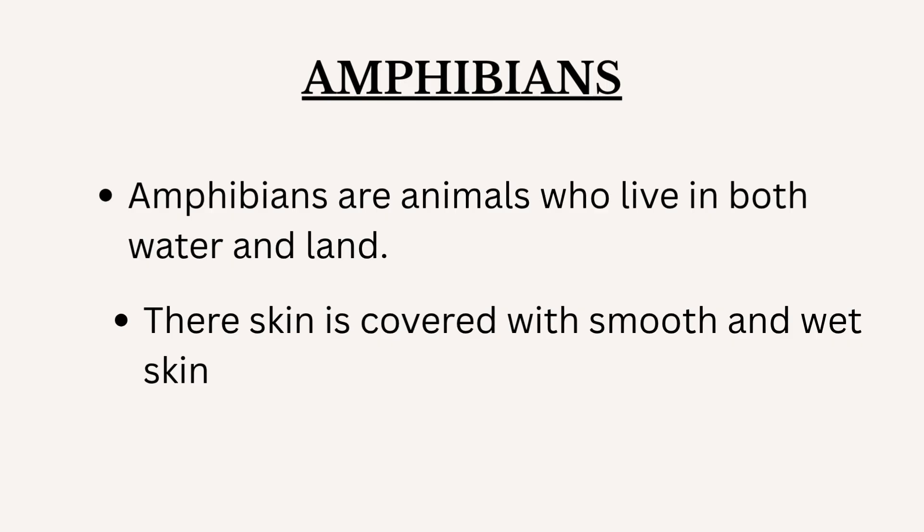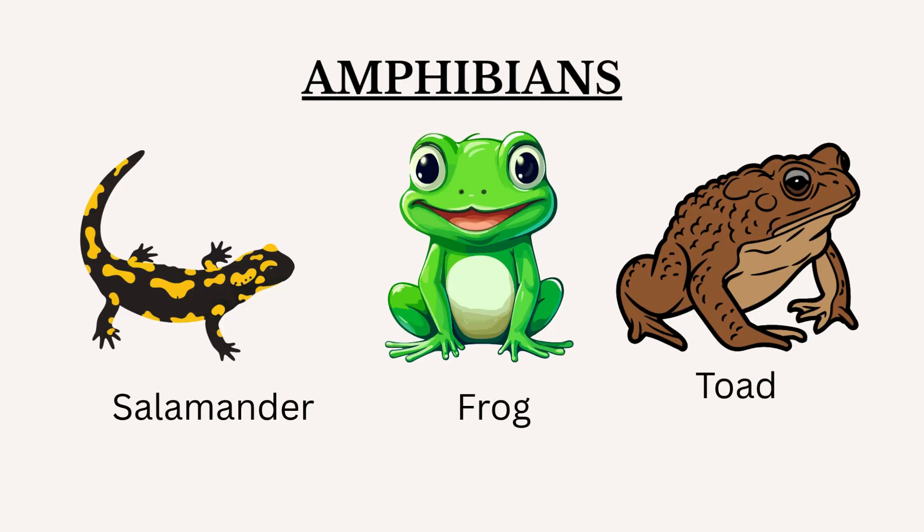Amphibians are animals who live in both water and land. Their skin is covered with smooth and wet skin. These are a few examples for amphibians: salamander, frog, and toad.